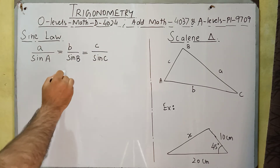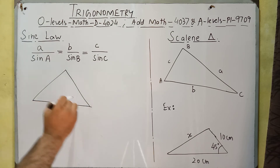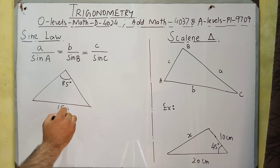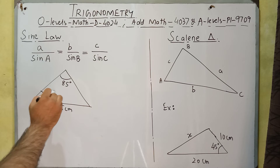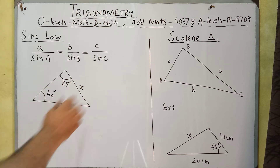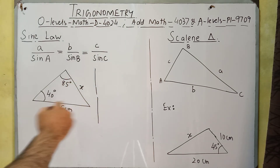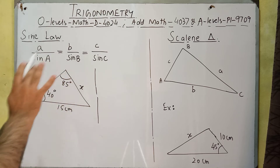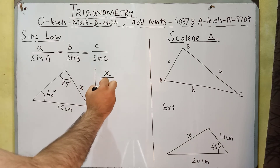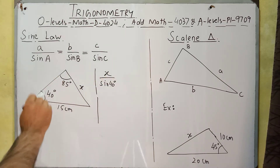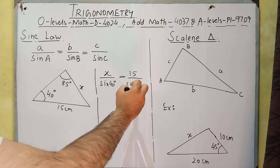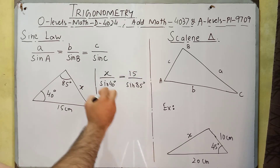We can use the sine law in calculations regarding scalene triangles. For example, suppose we have a triangle where one angle is 85° and the opposite side is 15 cm. If another angle is 40°, what is the opposite side x? Sine law says the ratio of side to opposite angle is always equal, so x over sin 40° equals 15 over sin 85°.